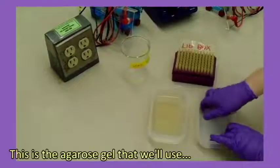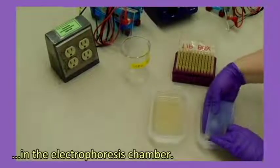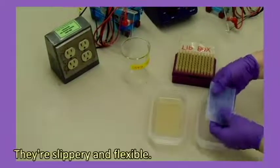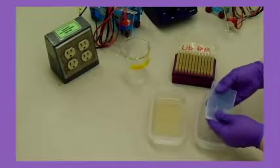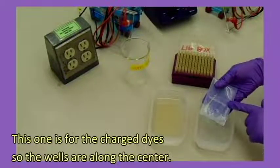This is the agarose gel that we'll use in the electrophoresis chamber. They're slippery and flexible. This one is for the charged dyes, so the wells are along the center.